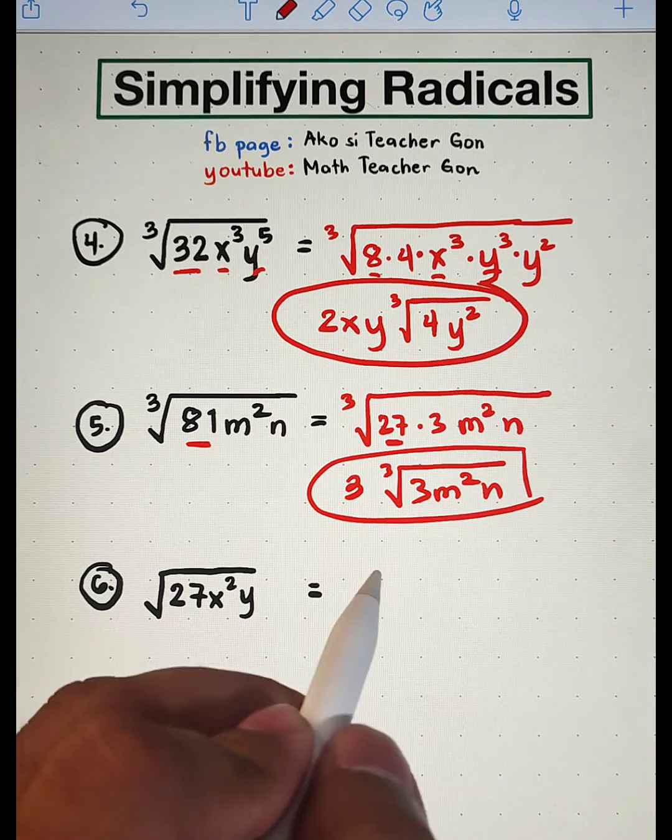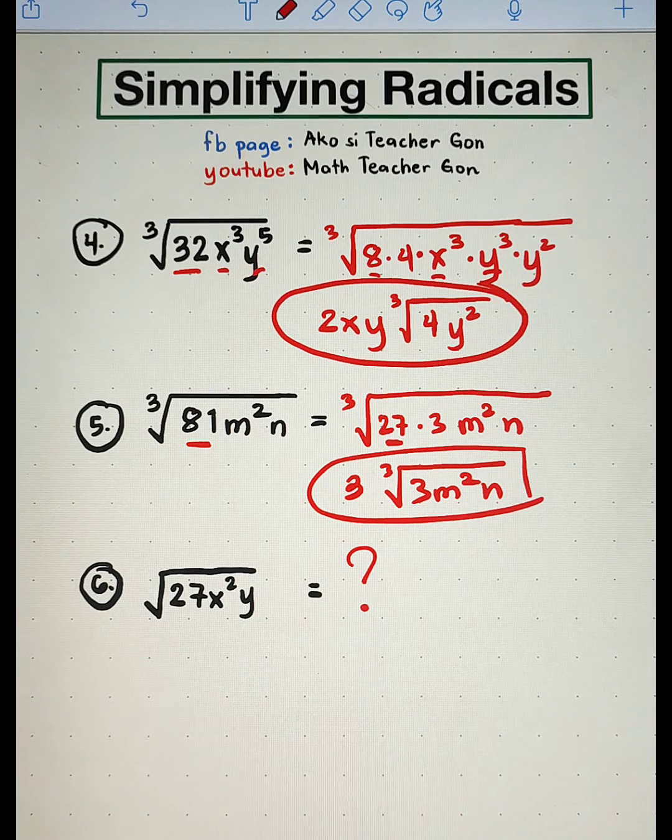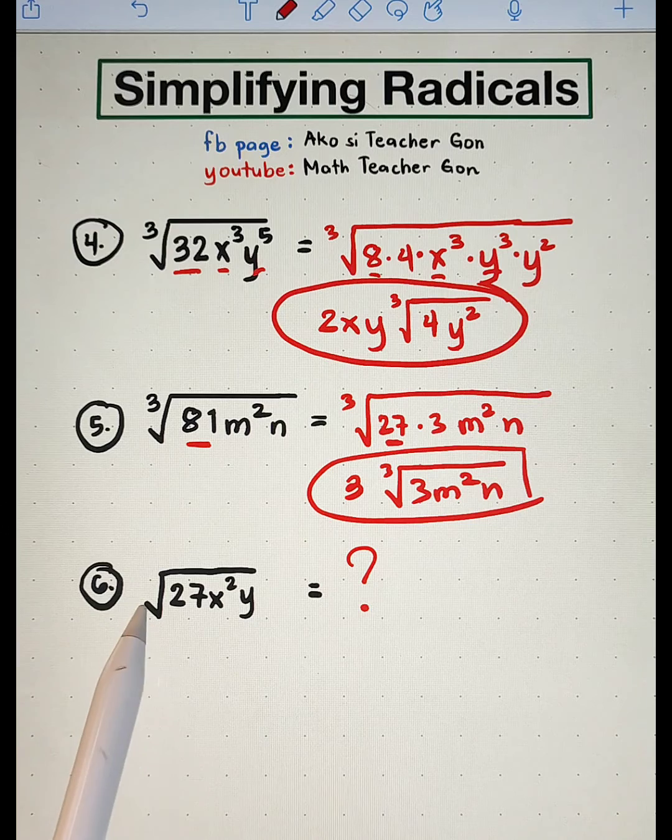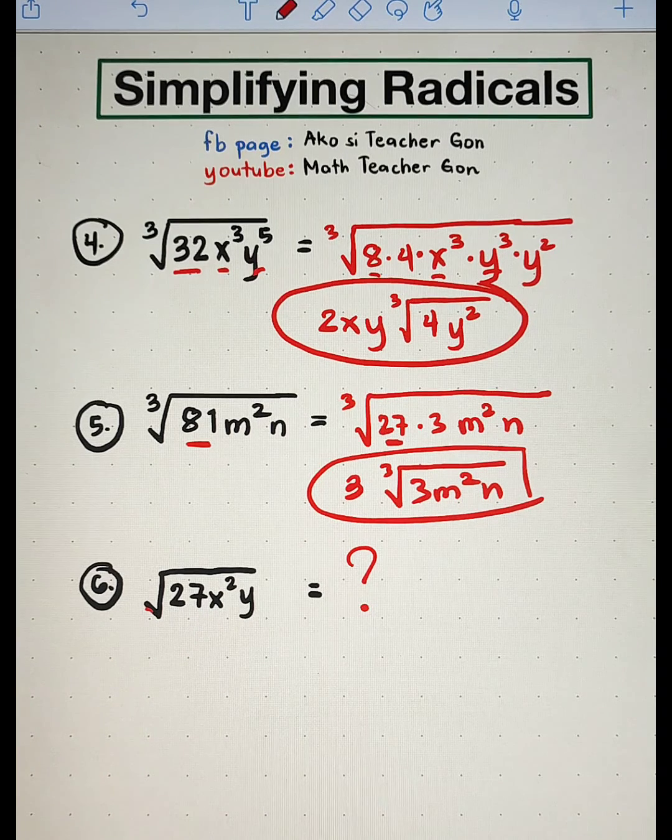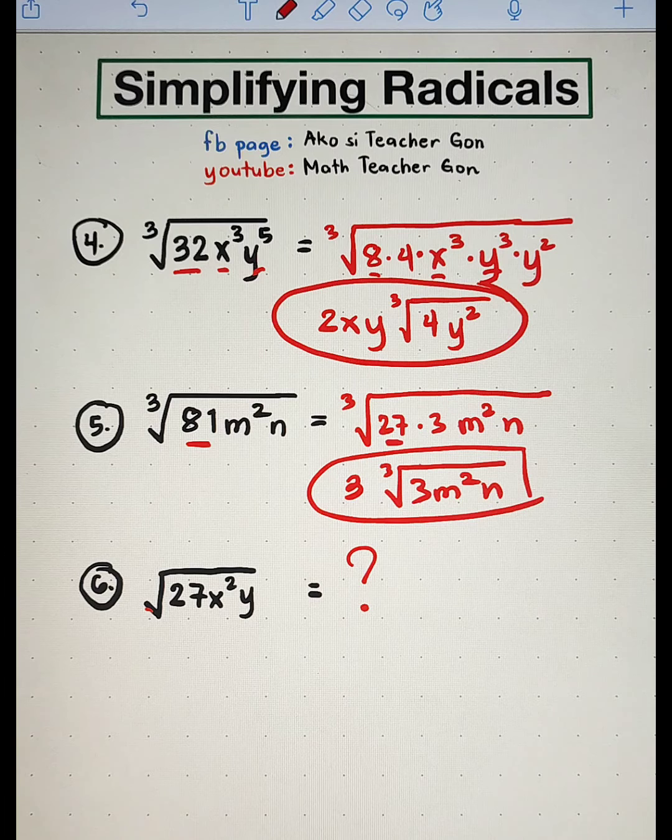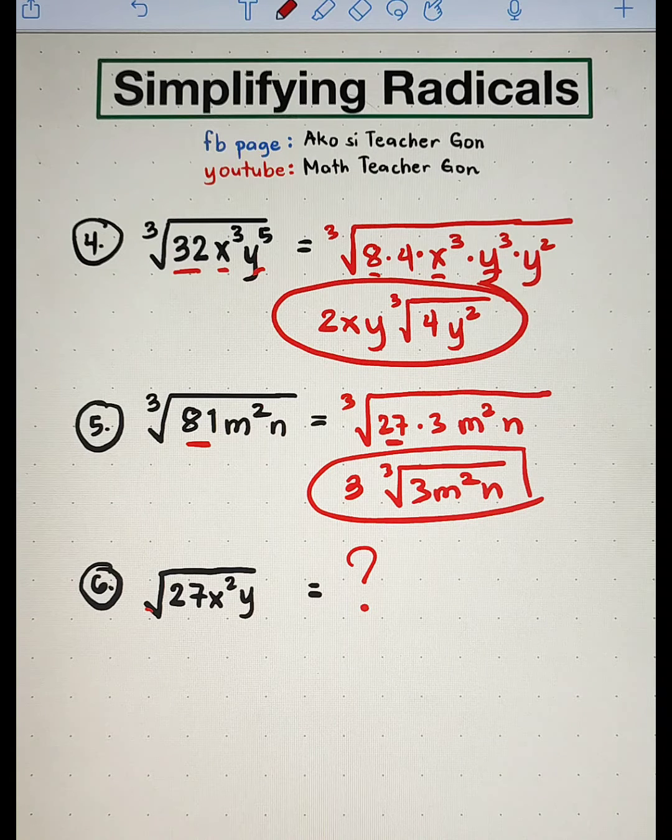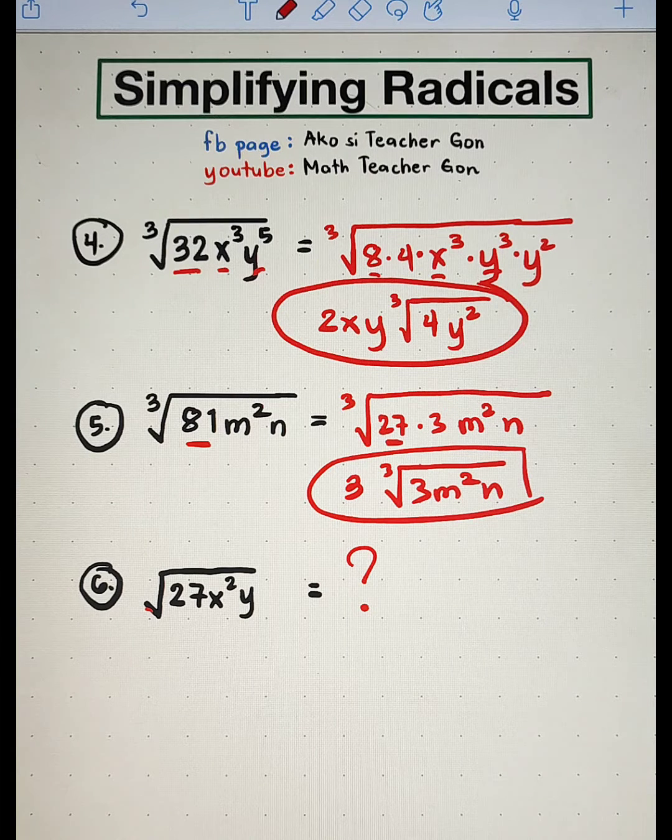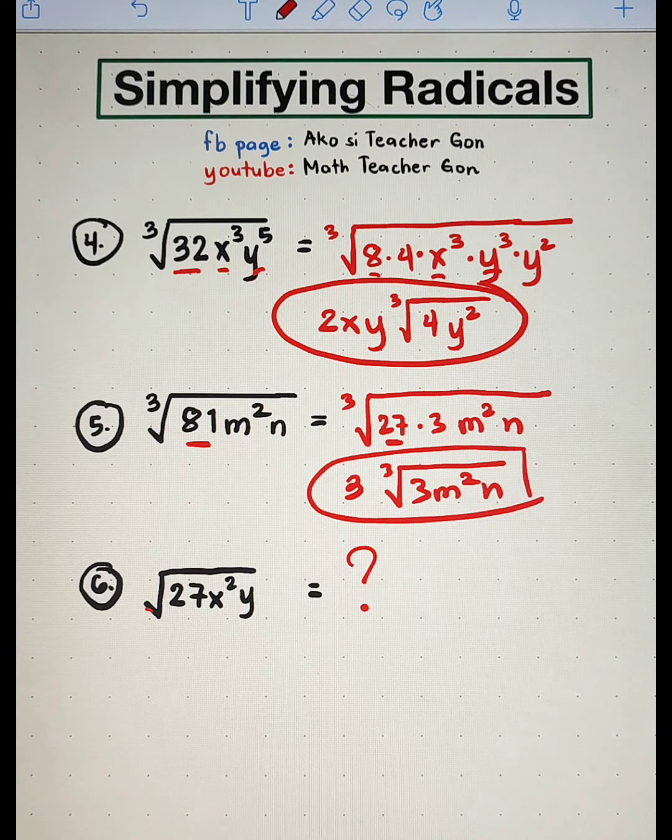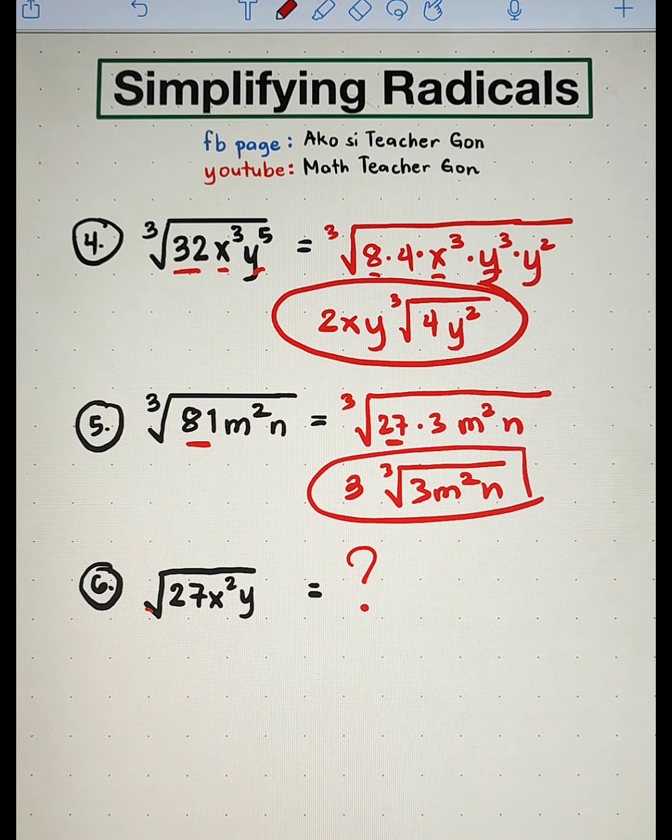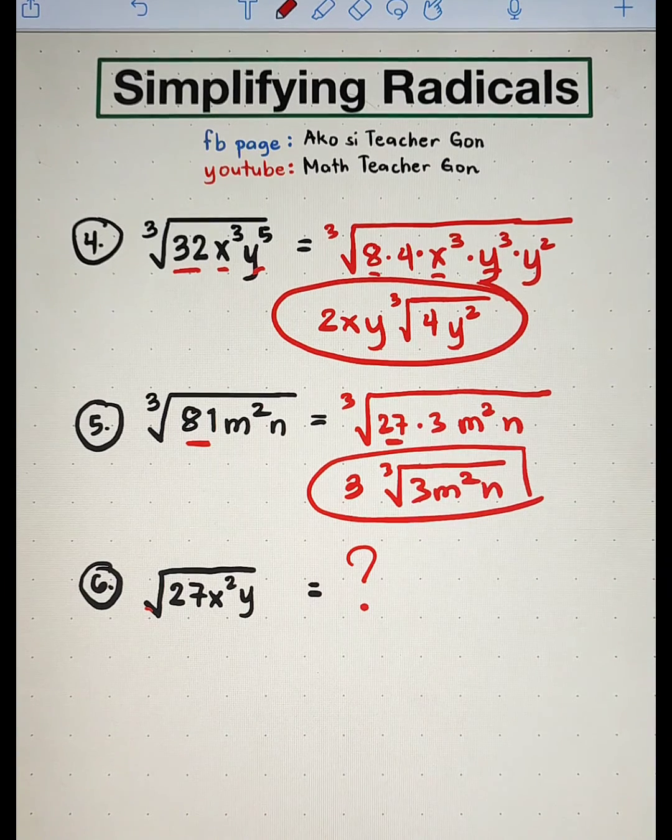Now it's your turn to try and answer item number 6. We have the square root of 27x squared y. I hope you learned something from this video, and if you are new to my channel don't forget to like and subscribe and hit the bell button for you to be updated on our latest uploads. Again, it's me teacher Goan. Thank you very much. Bye.